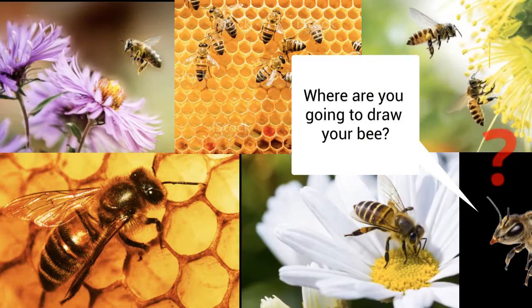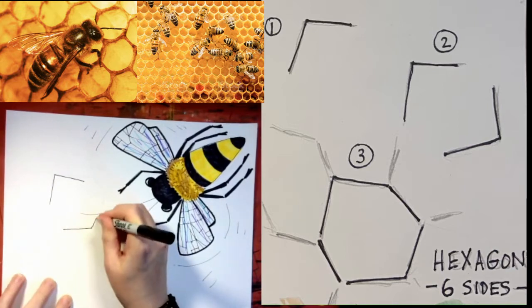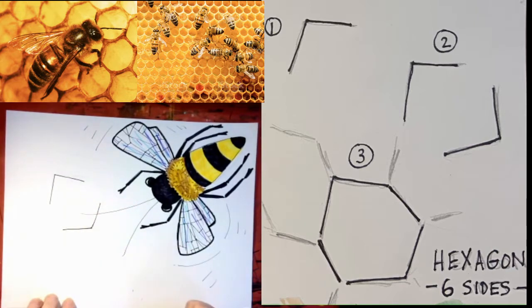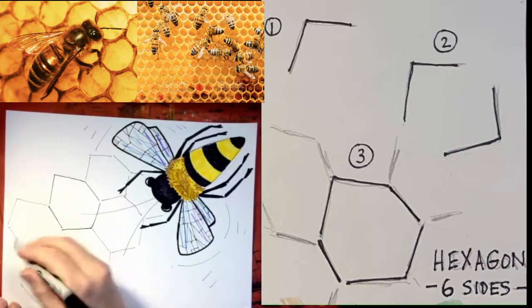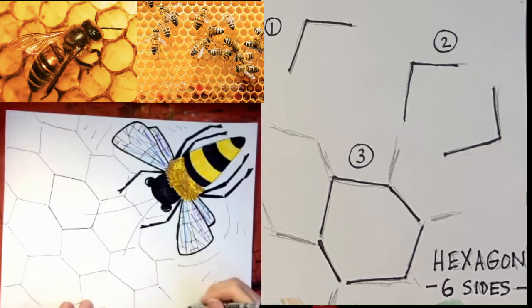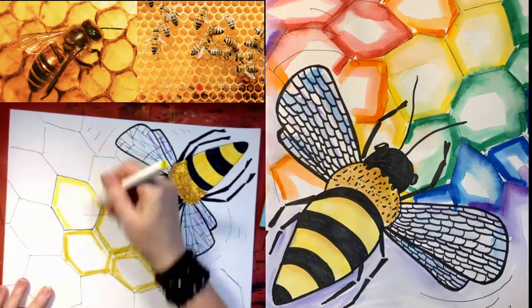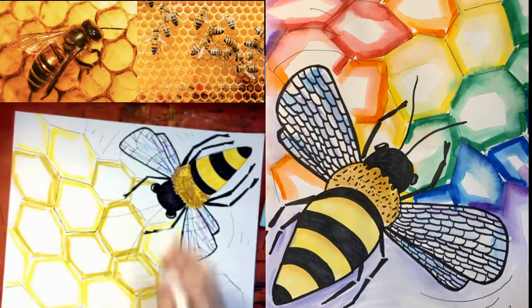Now draw the background. How do you want your background to look? Where is your bee — is it on a honeycomb or on a flower? Honeycombs are made up of hexagon shapes. To draw a hexagon, draw two wide triangles and connect them with two straight lines — now you have a six-sided hexagon. To draw a honeycomb, continue drawing hexagons and fill your paper with them. You might want to draw more than one bee on the honeycomb. Honeycomb is a golden yellow color, so I'm using my yellow marker, then painting some water over it so the marker lines blend with the paper.